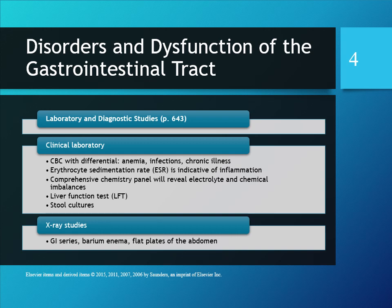Disorders and dysfunctions of the GI tract — laboratory and diagnostic studies can be found on page 643. Clinical labs include the CBC differential, which can check for anemia, infections (elevated white blood cells), and chronic illness if there are bands — immature white blood cells indicating we've used up the more mature ones. Erythrocyte sedimentation rate, or ESR, indicates inflammation. A comprehensive chemistry panel reveals electrolyte and chemical imbalances. Also used: liver function tests, stool cultures, and X-rays such as GI series, barium enema, and flat plate of the abdomen.